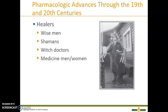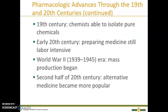Let's look at some pharmacologic advances through the 19th and 20th centuries. Healers were chosen based on their knowledge of plants, and in different cultures these were wise men, shamans, witch doctors, or medicine men or women. The isolation of pure chemicals marked the beginning of modern pharmacology. The mass production of penicillin began during World War II and minimized the number of deaths from infection. Pharmacology advanced rapidly in the second half of the 20th century as many new drugs were either discovered or developed almost daily.